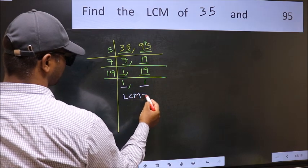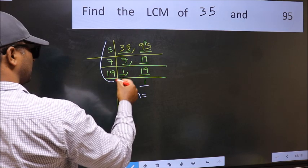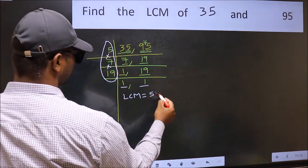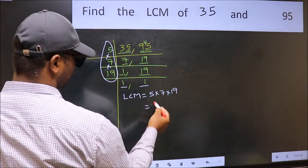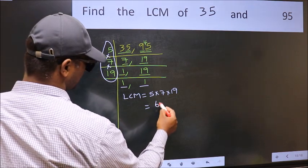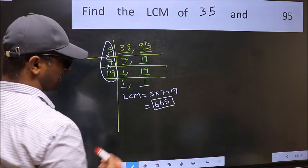So, our LCM is the product of these numbers. That is 5 times 7 times 19. When we multiply these numbers, we get 665 as our LCM.